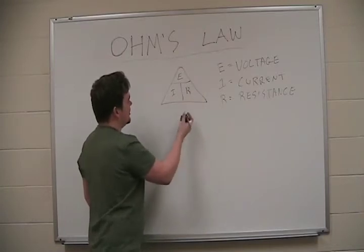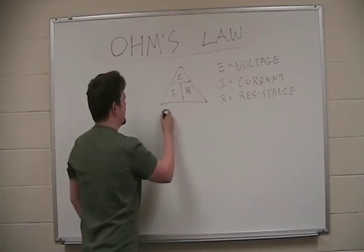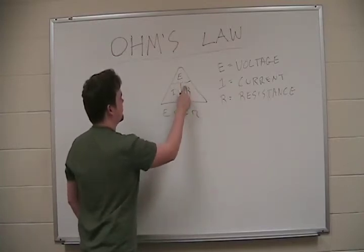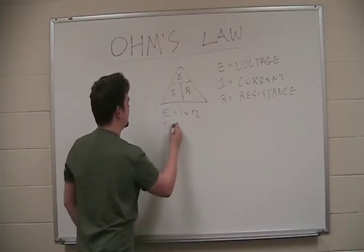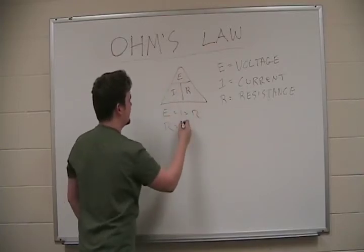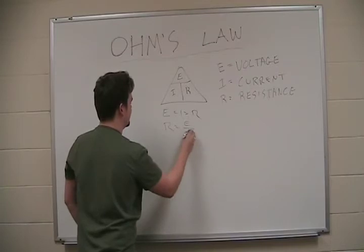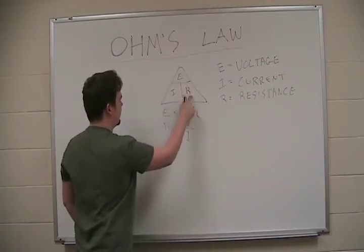So let's just write this out. E equals I times R. R equals E over I. And I equals E over R.